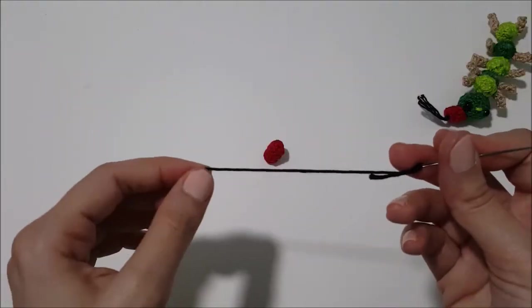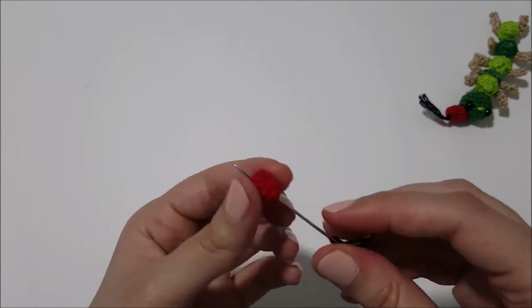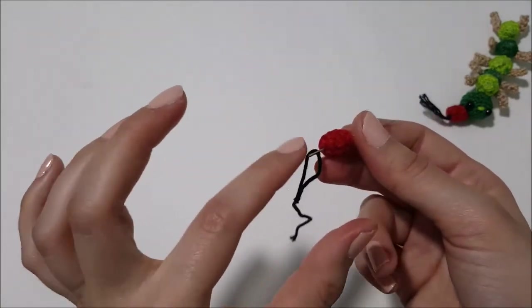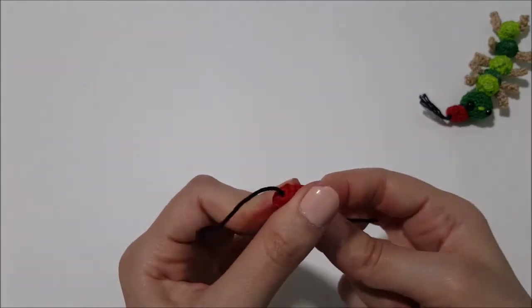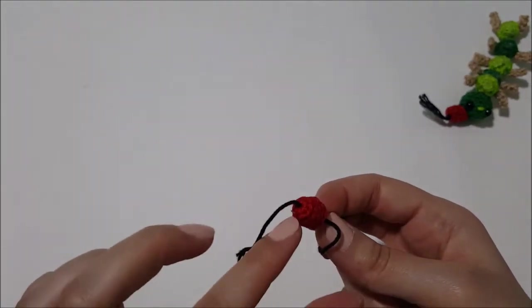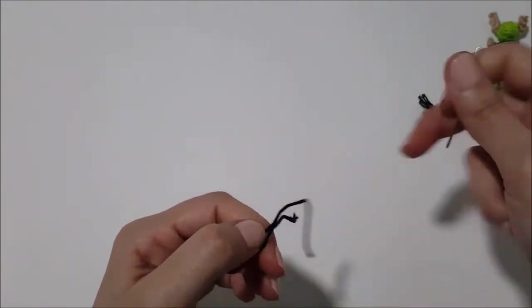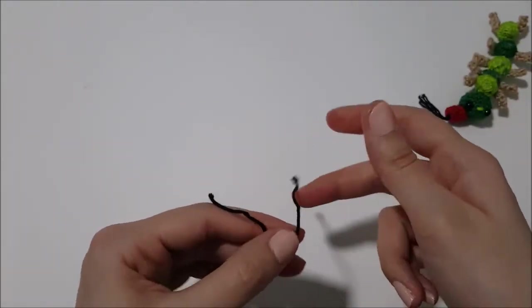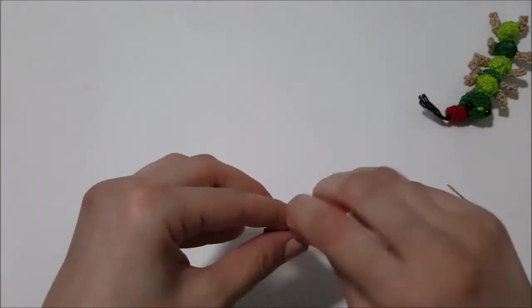Now you take the black yarn, you will insert it inside from the top. Now we will put it inside another time but be careful not in the same loop, beside it. Now you tighten it well.